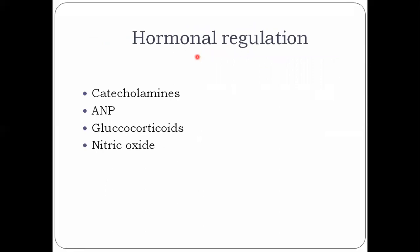We also have hormonal regulation, in which hormones come into action to regulate blood pressure. These include catecholamines, atrial natriuretic peptide, glucocorticoids, and nitric oxide.